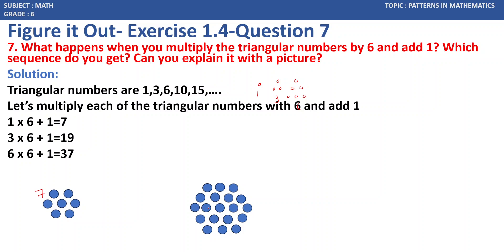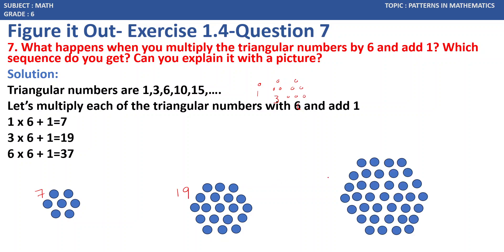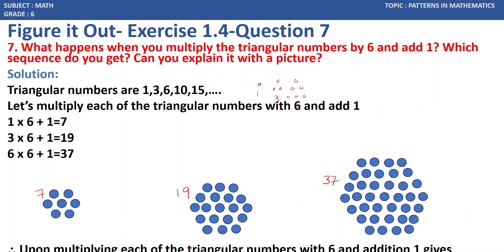For 19, we count the dots in the hexagonal pattern: 1 through 19, confirming the value is 19. Similarly, the next value is 37. So multiplying each triangular number by 6 and adding 1 gives hexagonal numbers. We call them hexagonal numbers because they appear in a hexagonal pattern — a shape with 6 sides. All these patterns are in the form of a hexagonal shape.